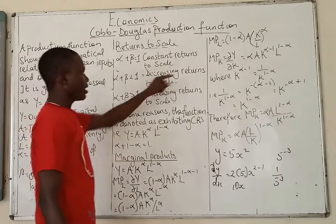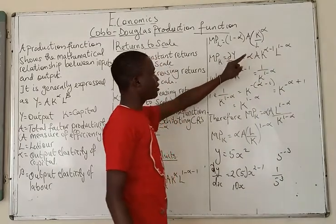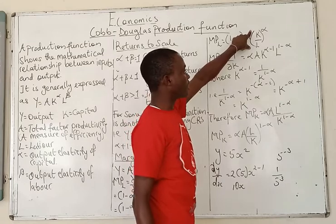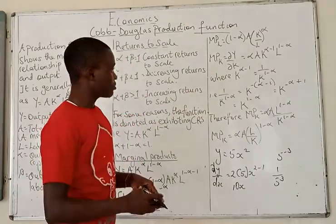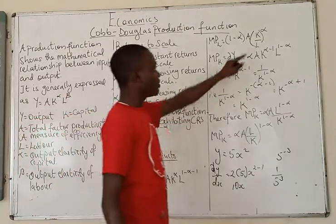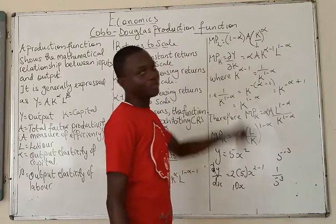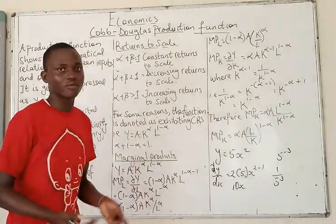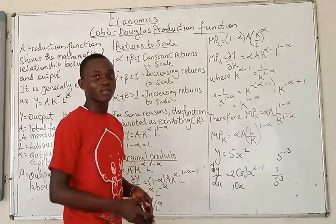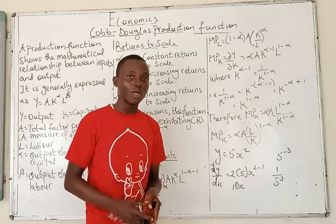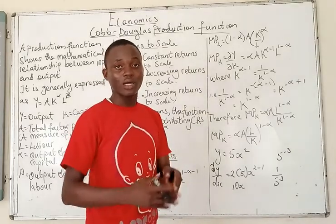One interesting thing to note: we are trying to get the marginal product of labor, but capital happens to be the numerator in the K/L fraction. That is telling us that for the marginal product of labor to increase, either labor should decrease or capital should increase. Think about it — is there any firm that only utilizes labor? There will always be capital: the building, the machines, no matter how simple or complicated they are.